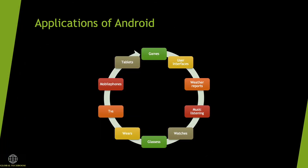There are many Android applications in the market. The top categories are weather, movies, TV, business, games, wearables, education, and so on. Android applications are usually developed in the Java or Kotlin language using the Android software development kit.